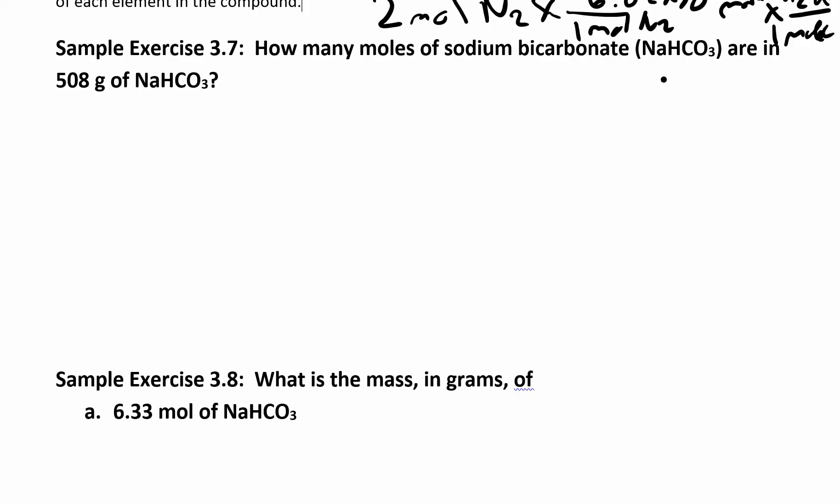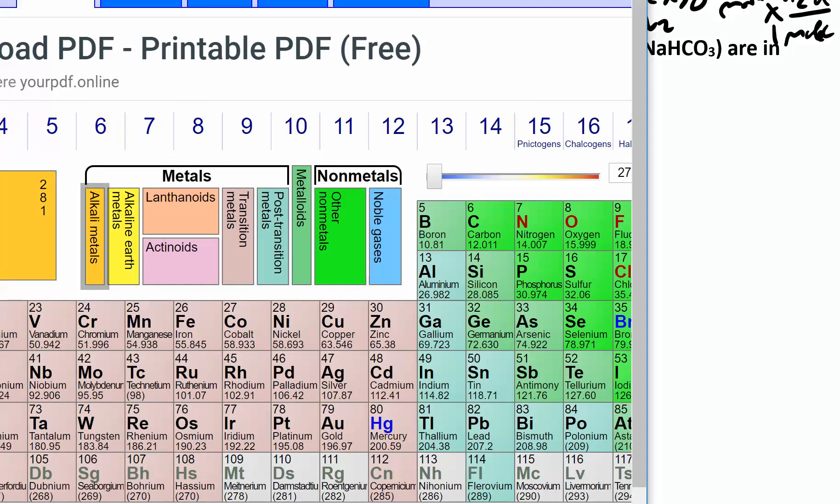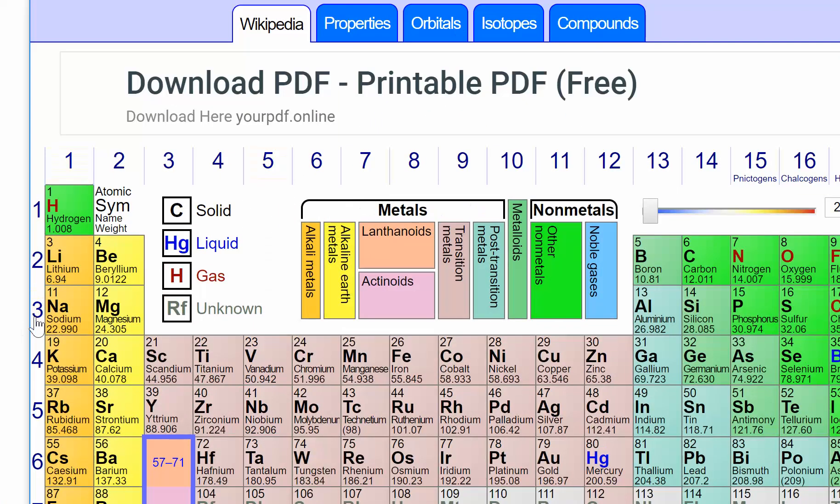How many moles of sodium bicarbonate are in 508 grams of sodium bicarbonate? This is just a grams to moles conversion. You need to figure out what the molar mass is. The very first thing you want to do is find molar mass by looking all the atomic masses up in the periodic table. Sodium is 22.99, I'm just going to say that's 23.